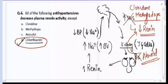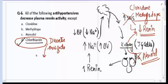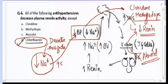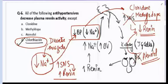Chlorothiazide is a thiazide diuretic. Thiazide diuretics decrease blood sodium level. As they decrease blood sodium level, it increases sympathetic discharge, which in turn increases renin activity. So the correct answer for question number six is chlorothiazide — it decreases blood sodium level, which in turn increases plasma renin activity.